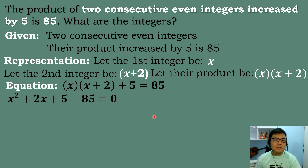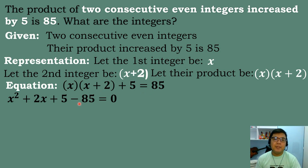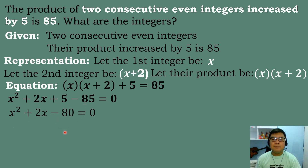We simplify using the distributive property. x times x equals x squared, x times 2 equals 2x. Bring down the 5, then transpose positive 85 to the other side — it becomes negative 85. Combining like terms: 5 minus 85 equals negative 80. So we have x squared plus 2x minus 80 equals 0. Now we solve for the roots.